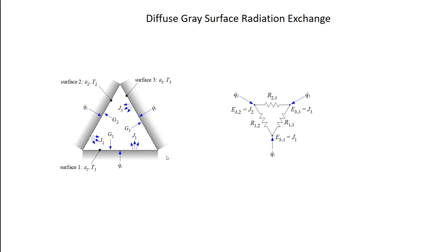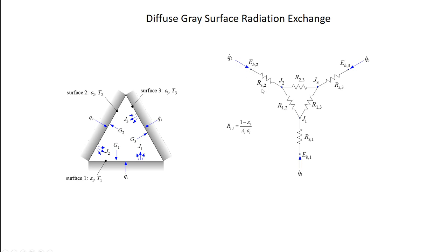If I want to make this network reflective of having gray surfaces or non-black surfaces, I have to add these resistors.